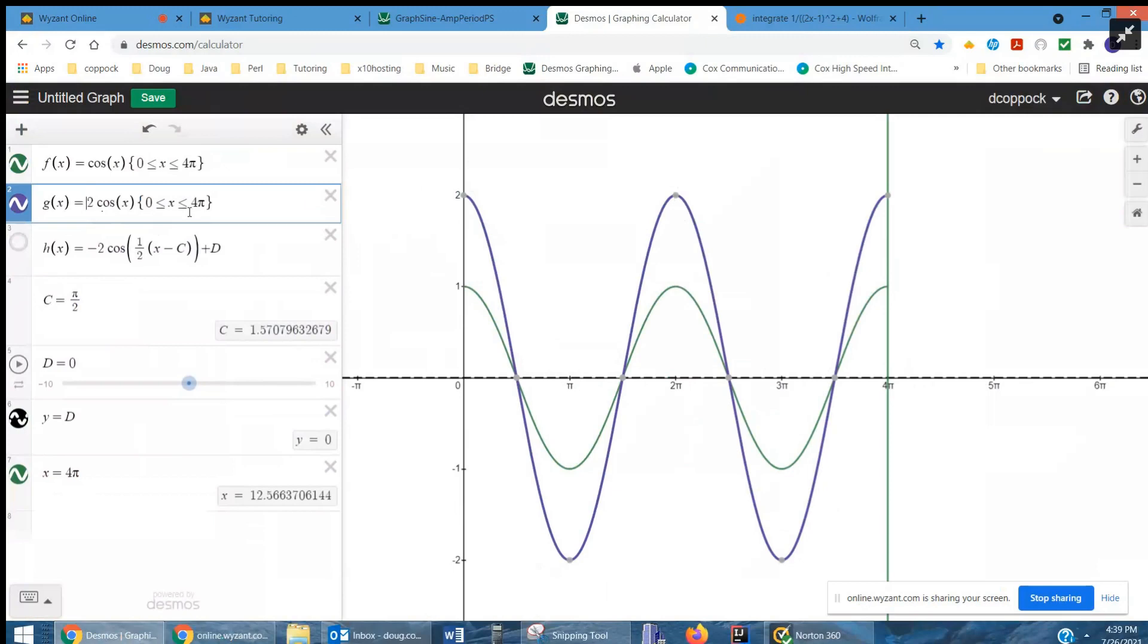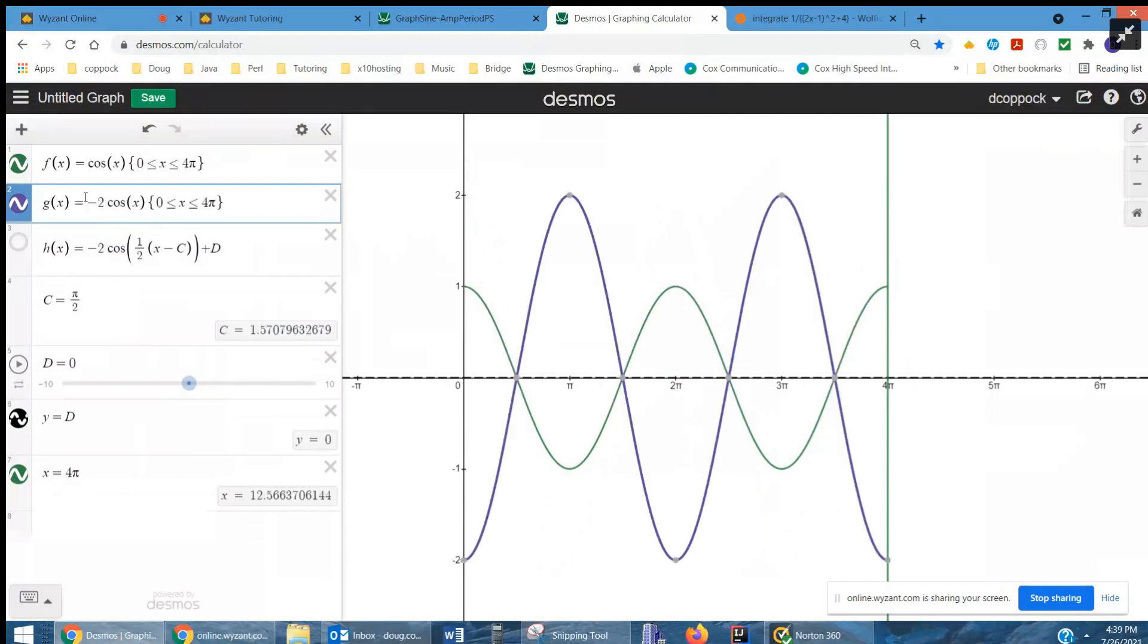So the amplitude is 2. If I make that number negative, it causes a reflection across the x-axis. So watch this: this point at zero, 2—it'll flip down here when I put a minus sign. There it goes. So everything is reflected over the x-axis.